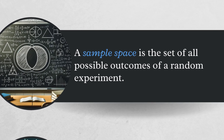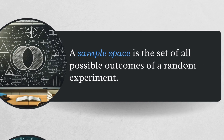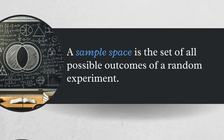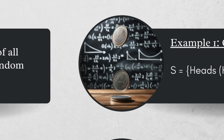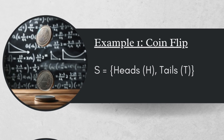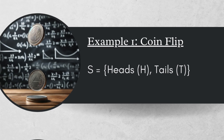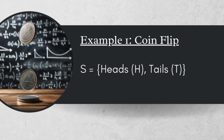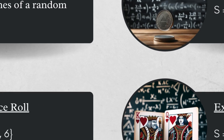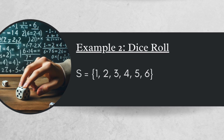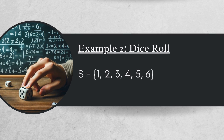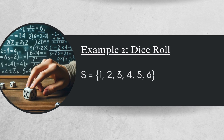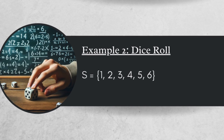Moving on to sample spaces, a sample space is the set of all possible outcomes of a random experiment. The first example is as simple as it gets, a fair coin toss. There are only two possible outcomes, heads or tails, so the sample space is just heads and tails. In the second example of rolling a fair six-sided die, the possible outcomes are the six faces of the die, and so the sample space is the six sides of the die.